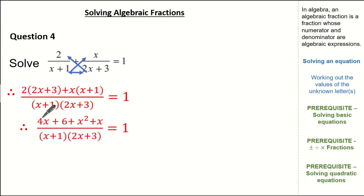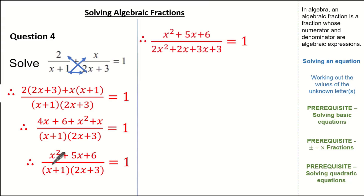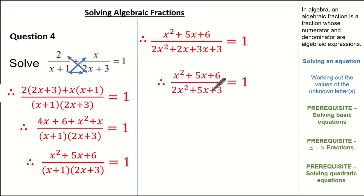Now let's expand the numerator. 2 times 2x is 4x; 2 times 3 is 6; x times x is x squared; and x times 1 is x. The denominator remains the same and it still equals 1. Collecting like terms in the numerator gives us x squared plus 5x plus 6. I kept the denominator in factorized form to see if any factors cancel — in this case they don't, so I'll expand: x times 2x gives 2x squared; 2x times 1 is 2x; x times 3 is 3x; and 1 times 3 is 3. Simplifying the denominator gives us 2x squared plus 5x plus 3.